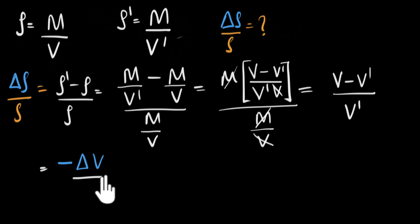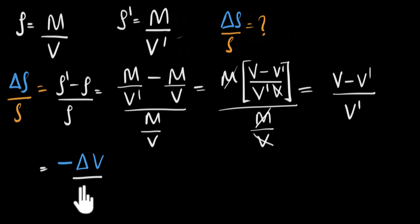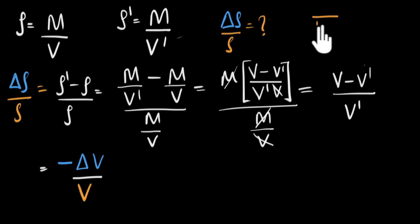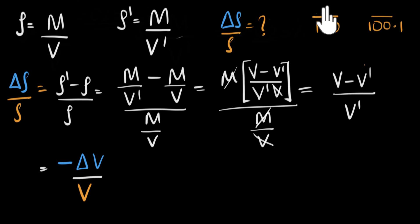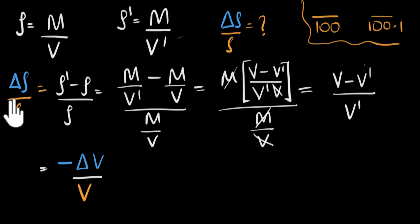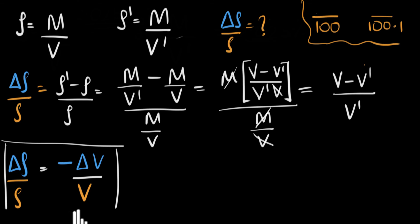In the denominator we have V-dash, but we need V. That's where we say: if the changes are very tiny, then V-dash and V are pretty much the same. For example, dividing some number by 100 versus by 100.1 gives pretty much the same result. That's why this only works when dealing with very small quantities. So we've just proved that the change in density per unit density is indeed the same as the change in volume per unit volume, provided the volume doesn't change too much.